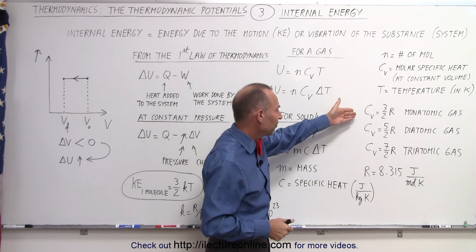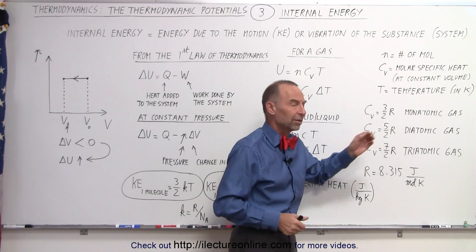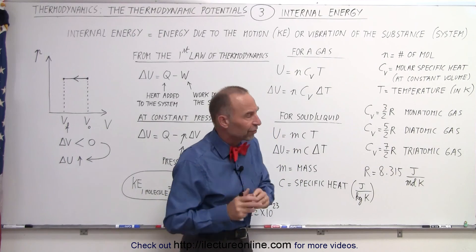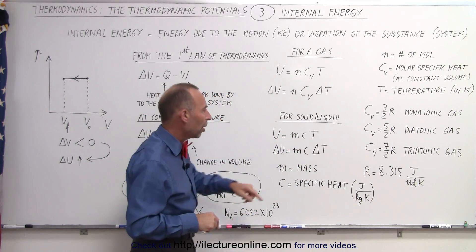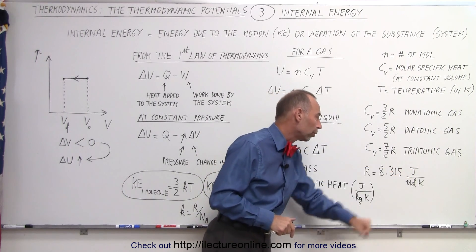But in general, C sub V can be defined as three halves, five halves, or seven halves for monatomic, diatomic, triatomic gas, with some subtle differences between the molecules. R is the gas constant to be 8.315 joules per mole times Kelvin.